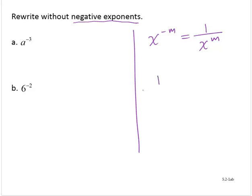Similarly, if we have 1 over x to the negative m-th power, I can write that as x to the positive m-th power. Again, the use of a reciprocal.